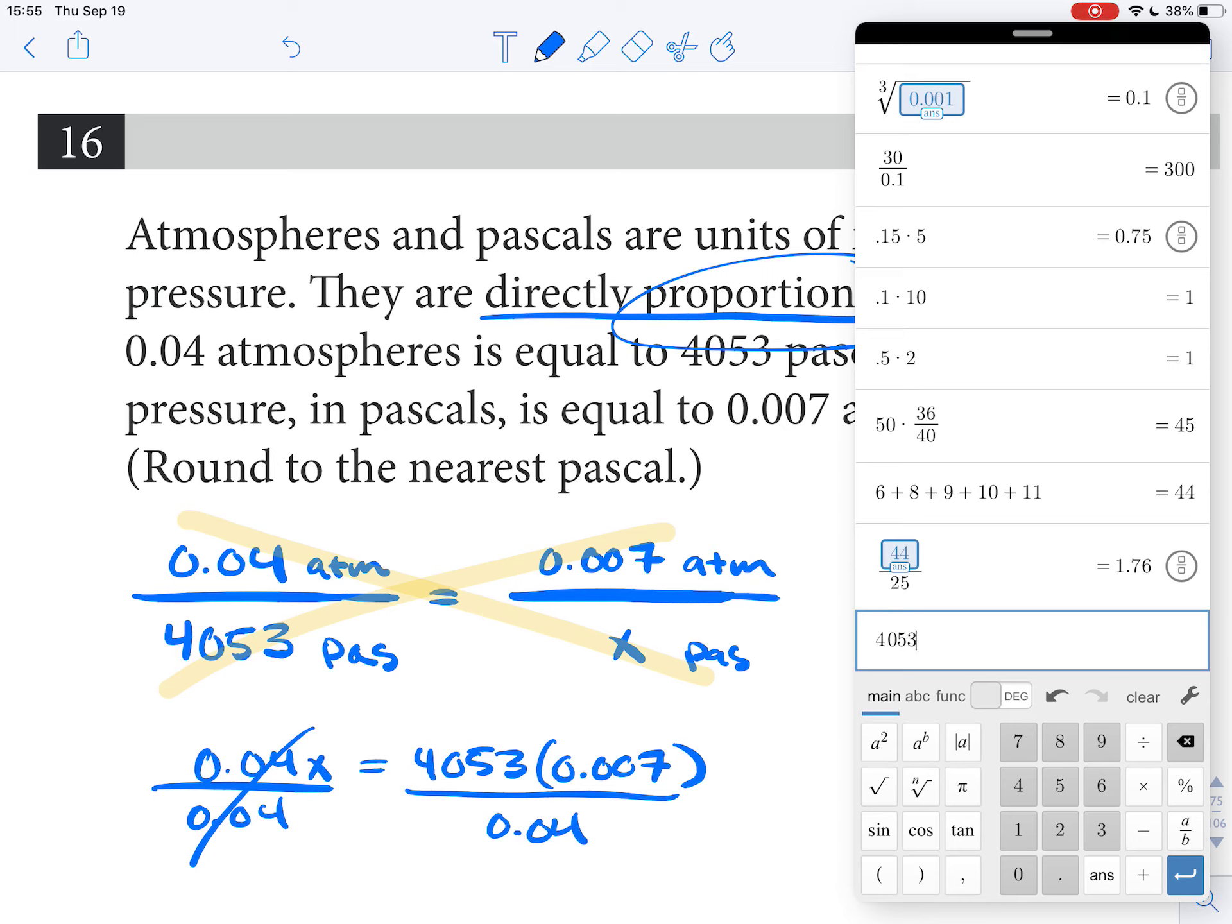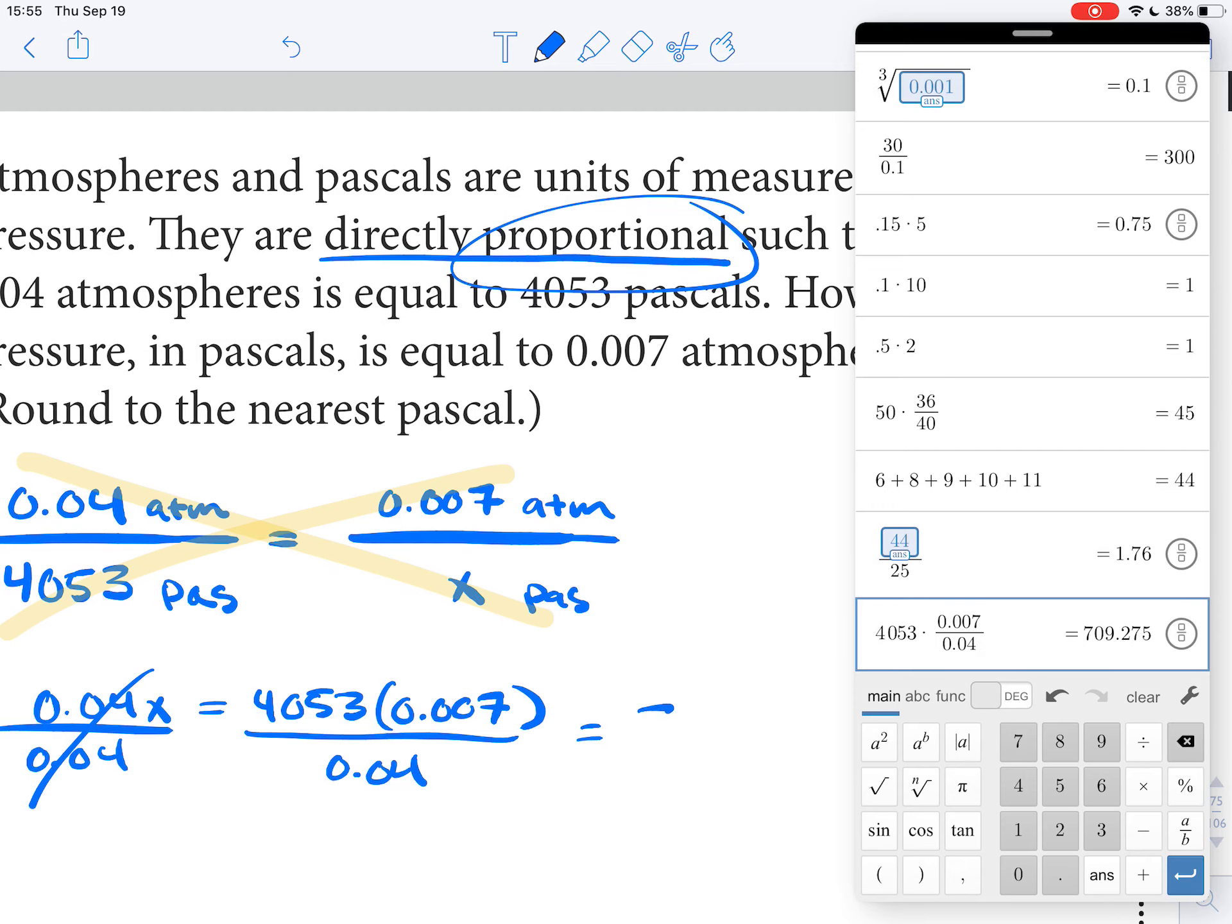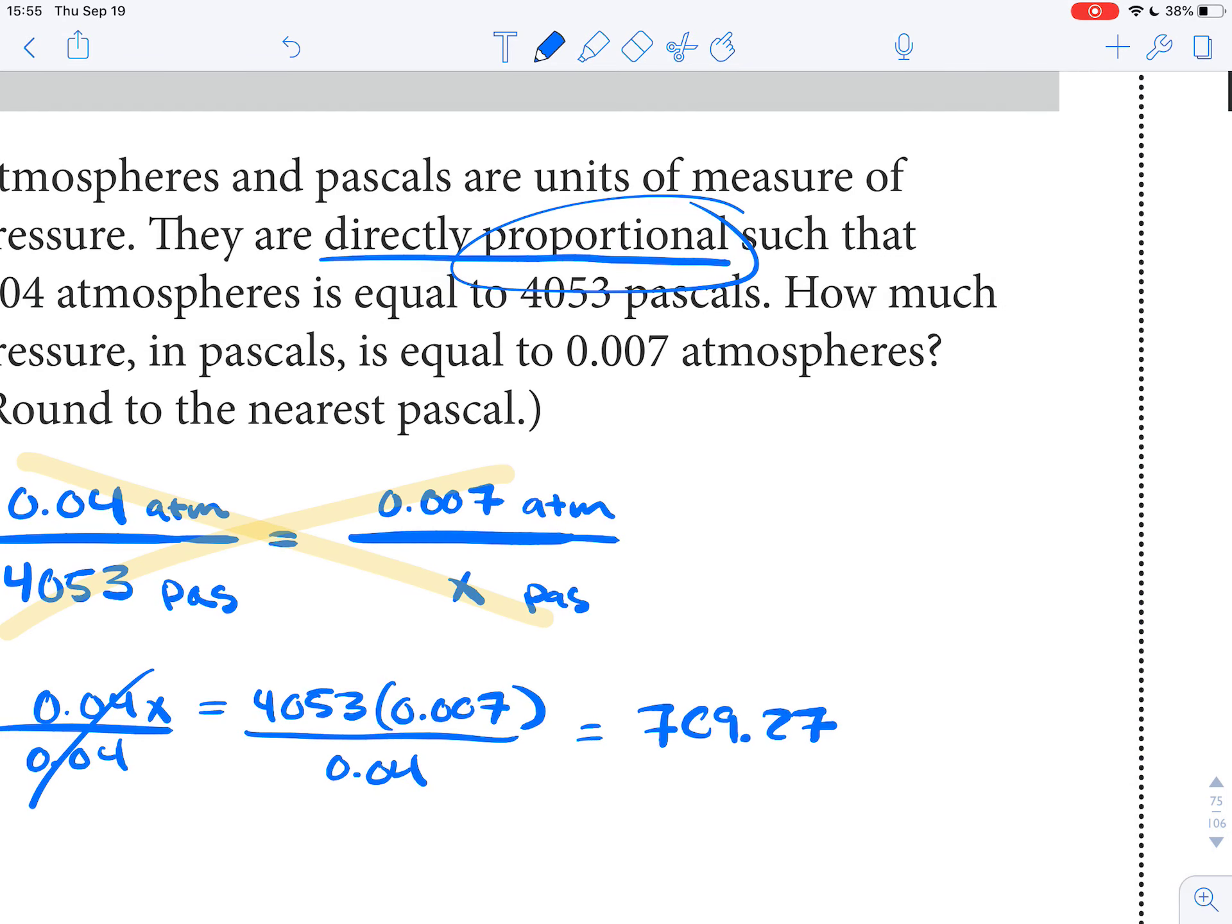So that's going to be 4053 times 0.007, and this is going to be divided by 0.04, and it looks like I get 709.27.